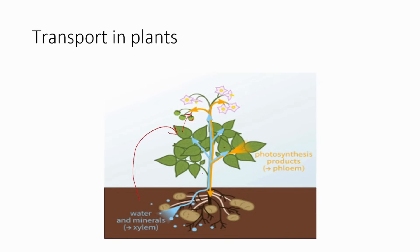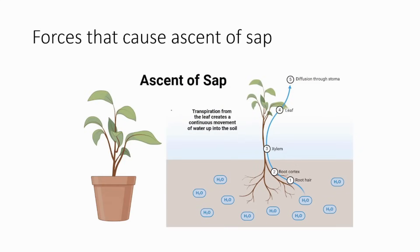In today's class we will understand the mechanism of transport of water. As you know, a plant will have roots, and the root is the part which absorbs water. But it is not like a sponge that simply absorbs water. There are certain reasons why the root is able to take up water molecules from around it.